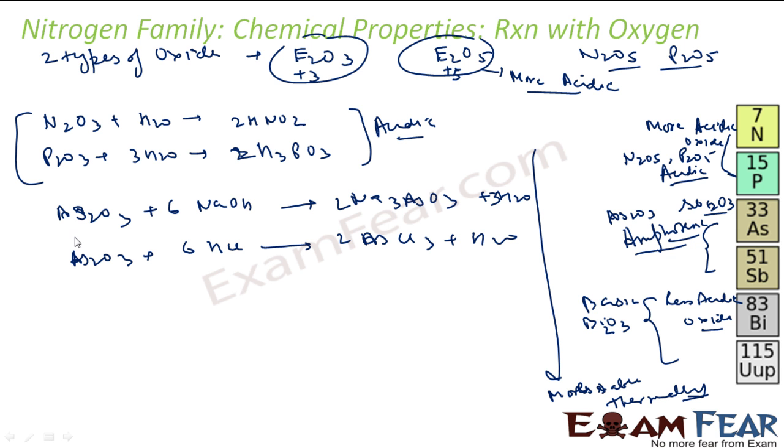If you react this As2O3 with acid also, it will react and it will form AsCl3 and H2O. If you see, this proves amphoteric behavior. This proves acidic behavior. If we talk about base, if I take Bi2O3, it will react with HCl because the base will react with acid. It will form BiCl3 and water.